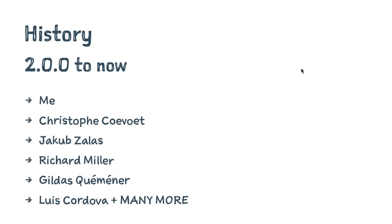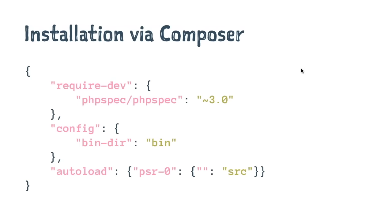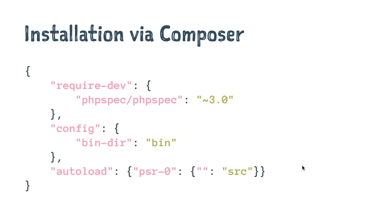You install PHPSpec through Composer. Version 3 is current; version 4 is planned for mid-year and will drop PHP 5 support, but version 3 will stick around for those still on PHP 5. The configuration is simple — all you need is a basic composer.json. If you have a more complex autoloading scheme, you'll need to tell PHPSpec about it in a separate YAML file.